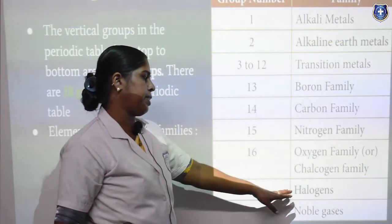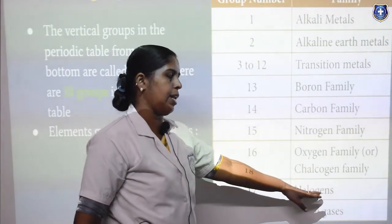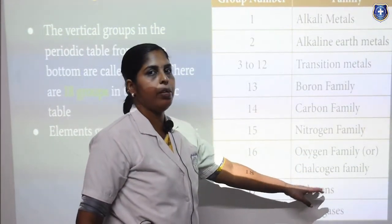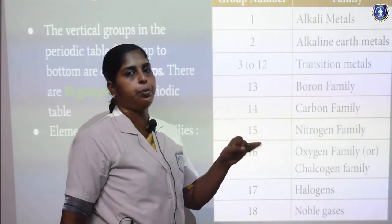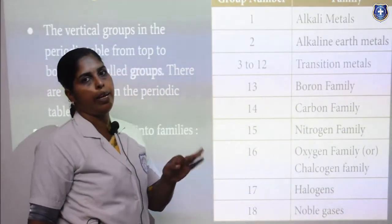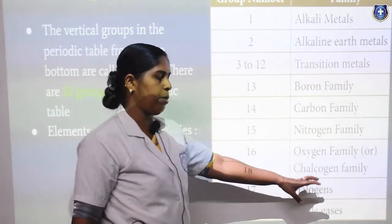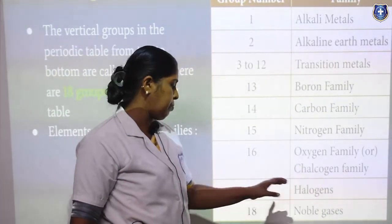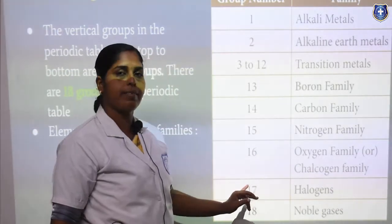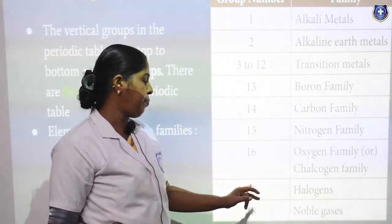The 17th group elements are known as halogens: chlorine, fluorine, bromine, iodine, and astatine. They are present in the 17th group.